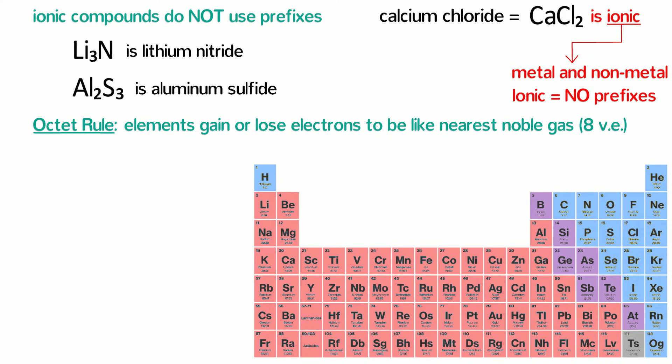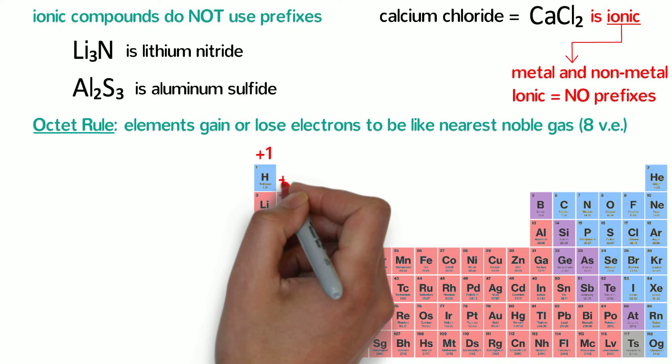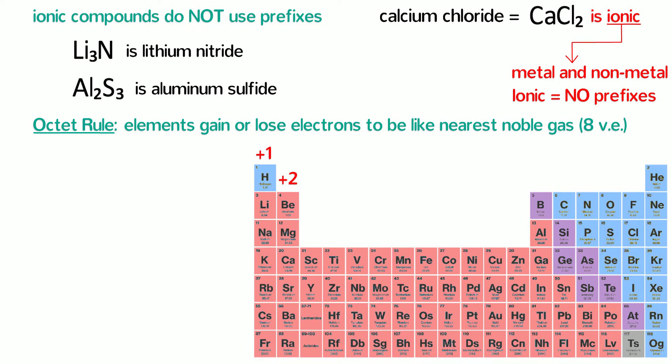This gives elements in column 1 a positive 1 charge, elements in column 2 a positive 2 charge, and then skipping the transition elements, aluminum forms ions with a positive 3 charge. Carbon has 4 valence electrons and generally does not form single atom ions, so we will skip the carbon column.